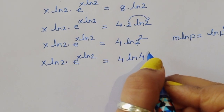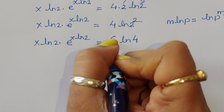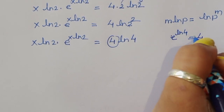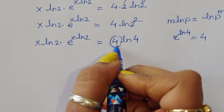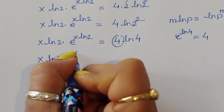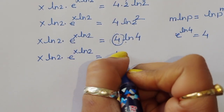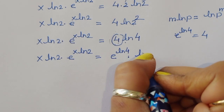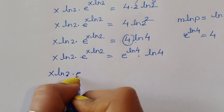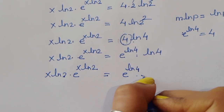Now 4 times ln of 4 — using the identity e power ln of 4 equals 4 — we write the right side as e power ln of 4 times ln of 4. So x ln of 2 times e power x ln of 2 equals e power ln of 4 times ln of 4.